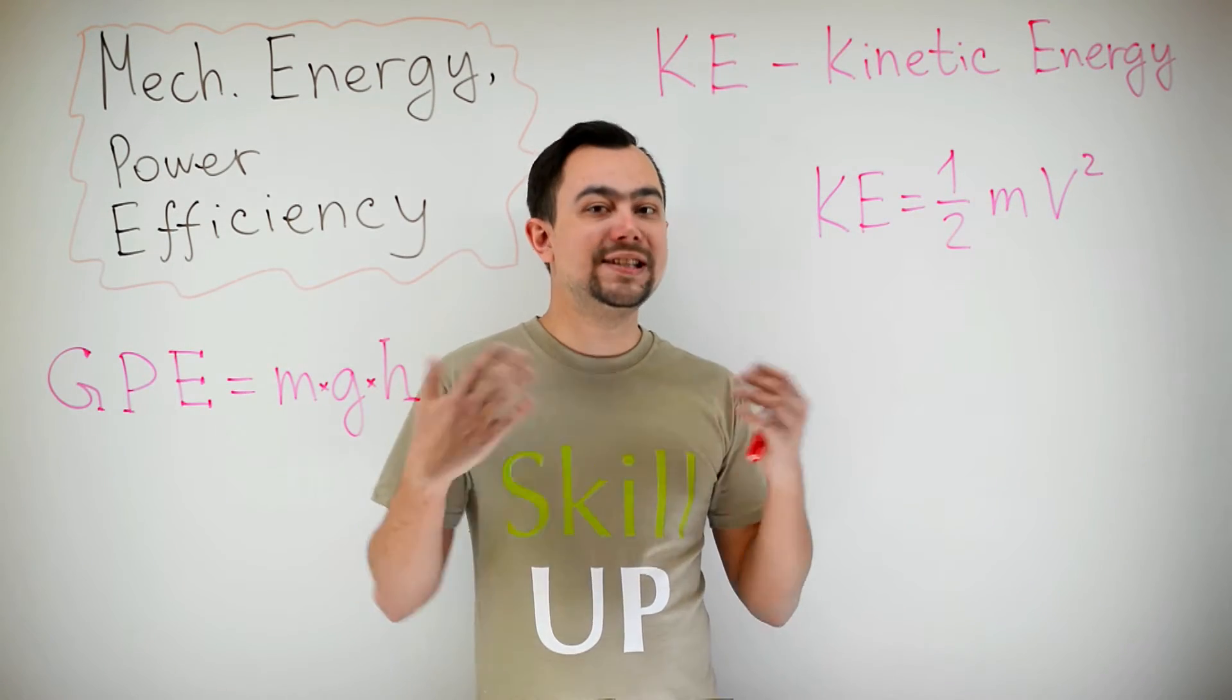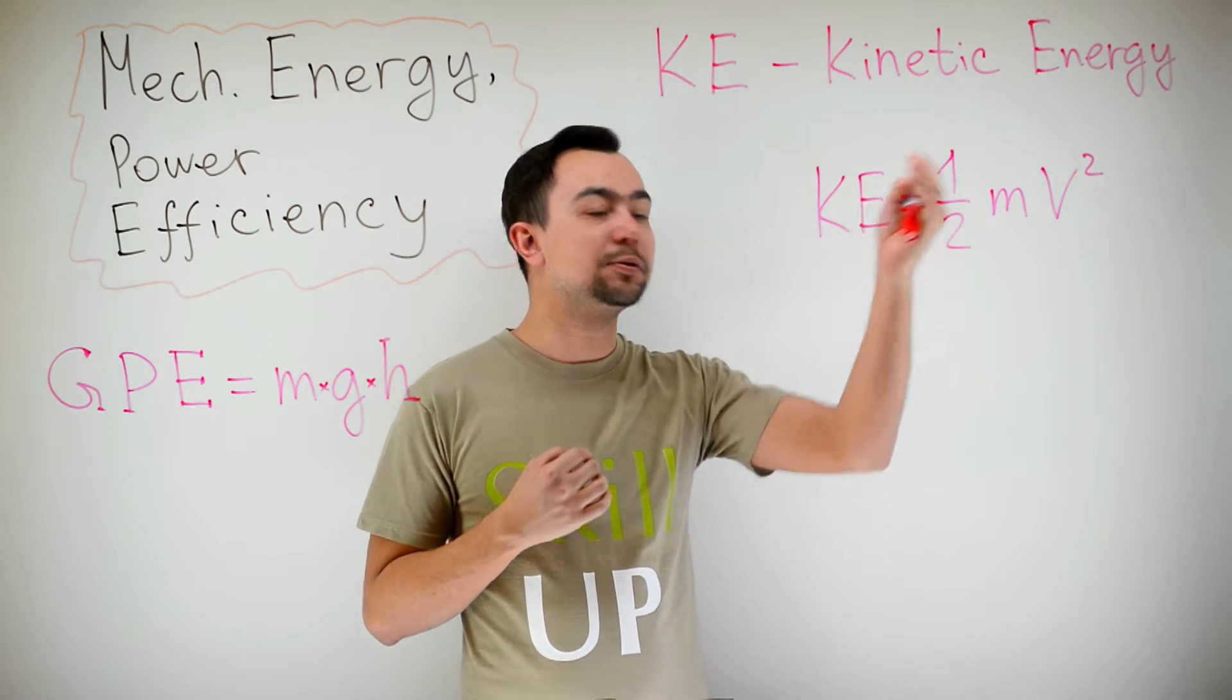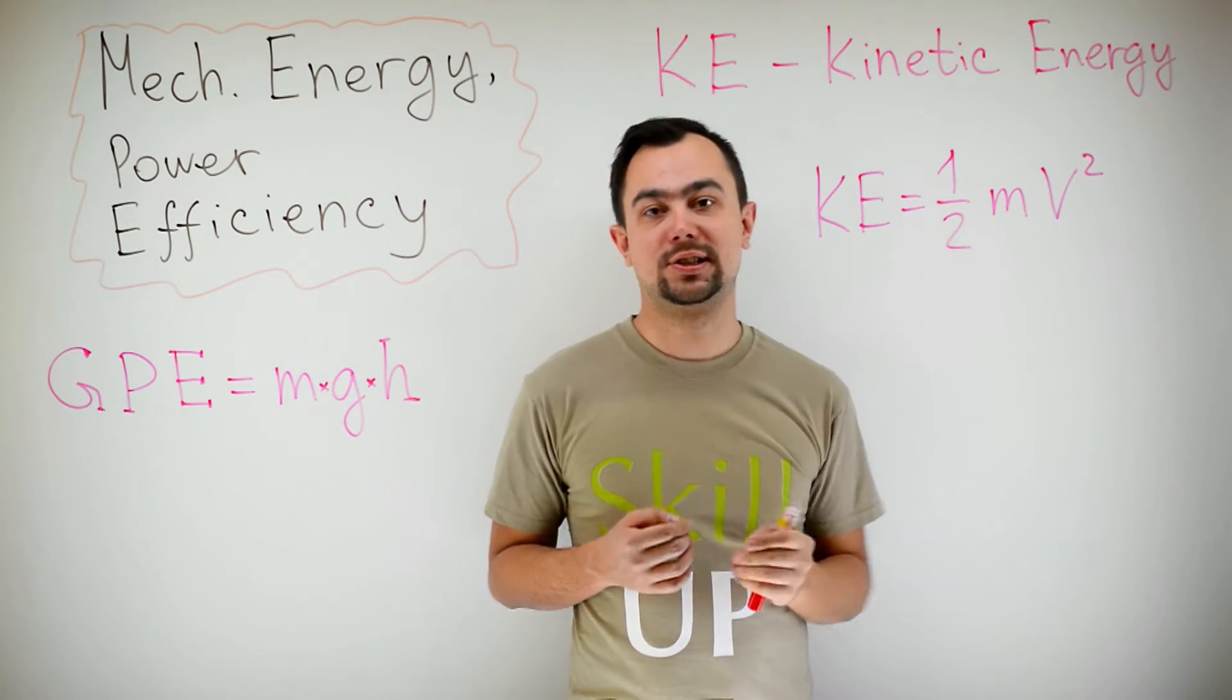When a body is moving, we say it has kinetic energy. Kinetic energy is equal to 1 half times the mass of the body times velocity squared.